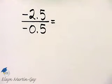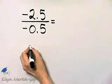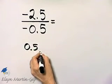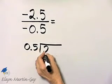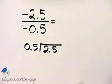Now let's think about two and five tenths divided by five tenths. It is completely up to you. If you'd like, you can go to the side and divide five tenths into two and five tenths.